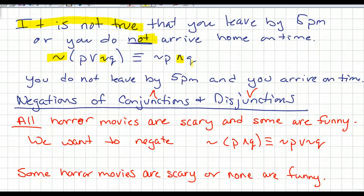So putting this into English, it is you do not leave by 5 p.m. and you arrive on time. So negations of conjunctions and disjunctions, it's just using that DeMorgan's Law. The other example down below is all horror movies are scary and some are funny. So if we want to negate this, we're using DeMorgan's Law, and it goes from all to some, so some horror movies are scary or none are funny. Because you go from some to none or all.